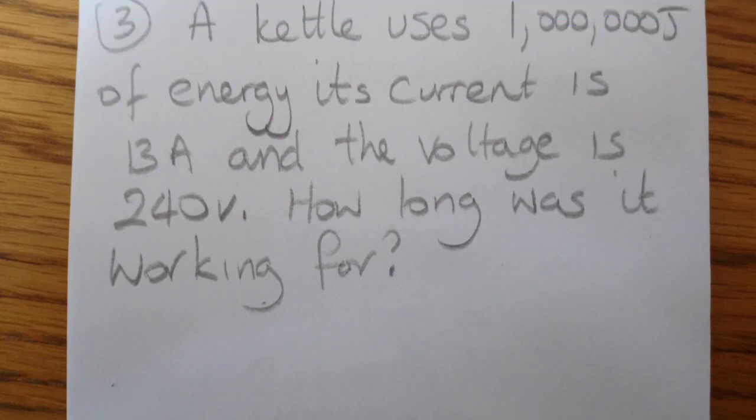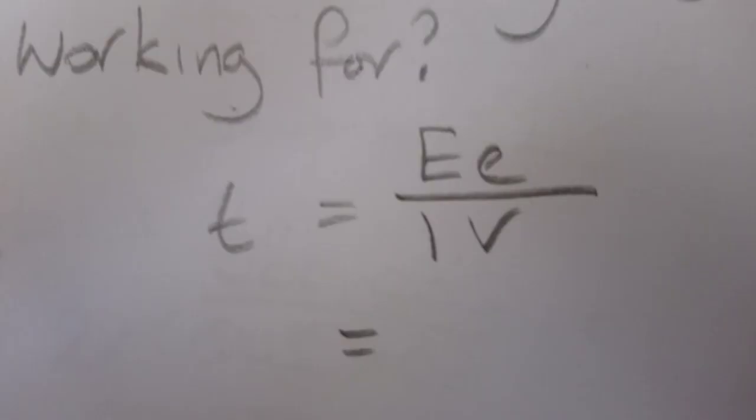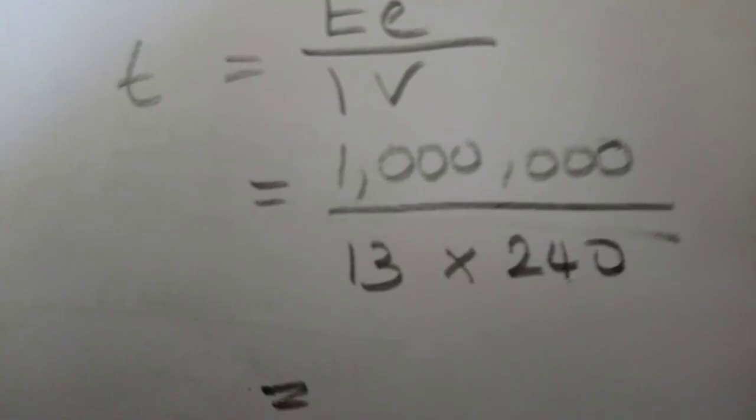Now we're working out the time for this kettle—how long it takes to boil water or heat up water. You can see the other details here: 1 megajoule is your energy. We're going to change it around this time so that time is equal to electrical energy divided by current times voltage. So you're going to have 1 megajoule over 13 times 240, and you'll find that time.